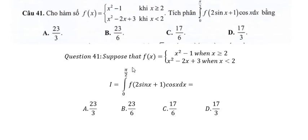Question 41. Suppose that f(x) equals x squared minus 1 when x is greater than or equal to 2, and x squared minus 2x plus 3 when x is smaller than 2.